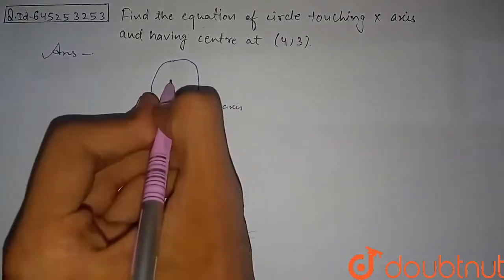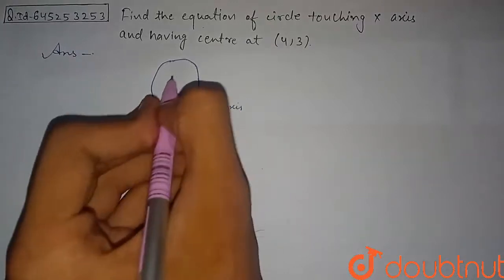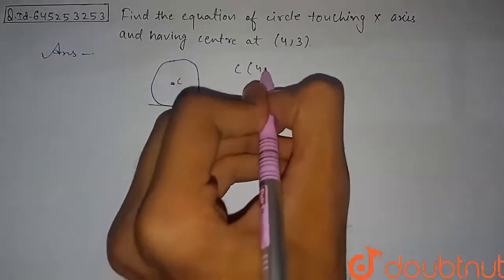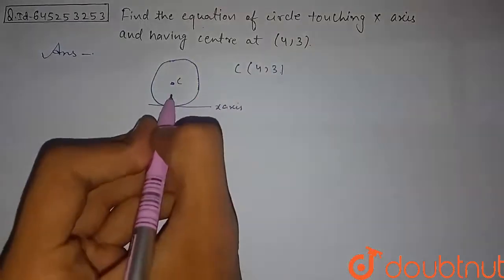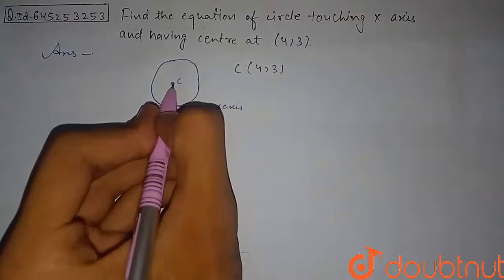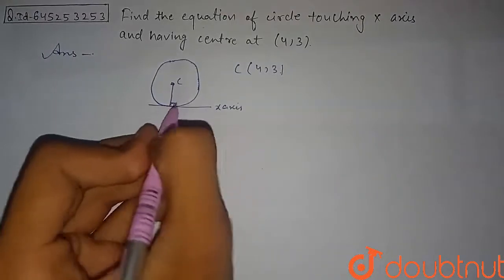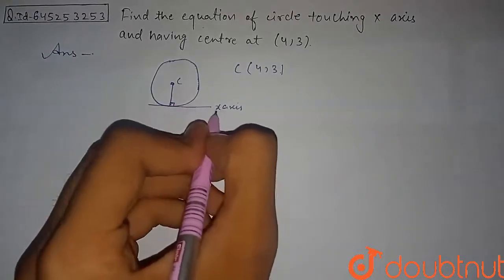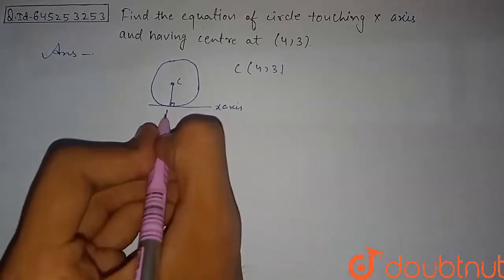So from here, if (4,3) is the center, we can say that this center C has coordinate (4,3). We can say that the perpendicular distance of this x-axis from the center, let's name this point D. If you draw the perpendicular on this tangent that is basically x-axis, this will be D.